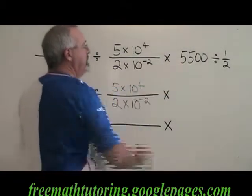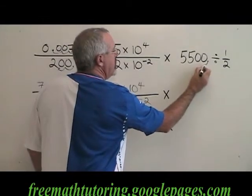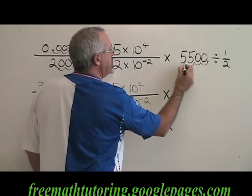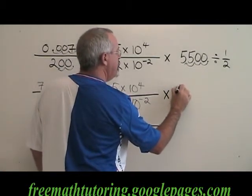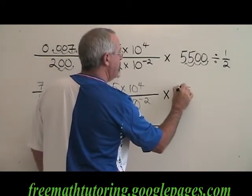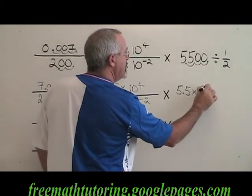Next I have this 5500. I am moving the decimal 1, 2, 3 spaces to the left. So 5500 becomes 5.5 times 10 to the 3.